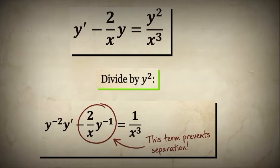This equation was fundamentally different from anything Leibniz's method could handle. Look at this term right here: minus 2/x times y to the negative 1. This term prevents separation — it mixes x and y in a way that cannot be untangled using simple algebraic manipulation. No matter how Bernoulli tried to rearrange the equation, this term kept him from getting all the x's on one side and all the y's on the other. For a moment it seemed the problem was truly unsolvable. But Bernoulli was no ordinary mathematician — he was about to have a brilliant insight, one that would change the course of differential equations forever.